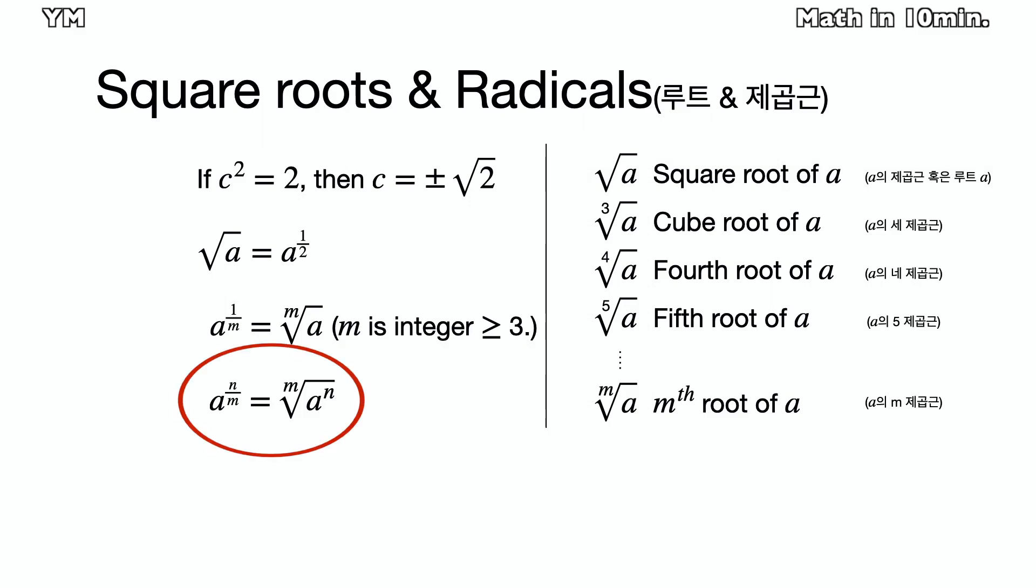In case of a to the n over m power, when n and m are natural numbers, it is equal to mth root of a to the n power. That is, take the power first and then roots.